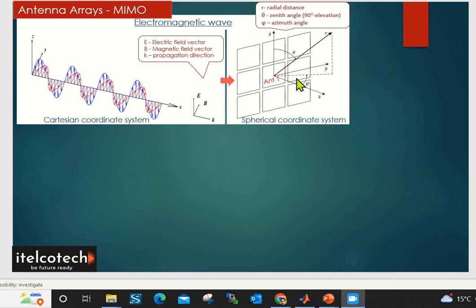Now the signal transmission or the pattern depends upon two major factors. One is a zenith angle, which is theta. Another is an azimuth angle, which defines how the beam is being formed in horizontal and vertical plane respectively.